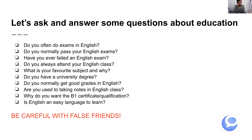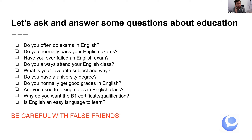Number one: Do you often do exams in English? [pause] Number two: Do you normally pass your English exams? [pause] Number three: Have you ever failed an English exam? [pause] Number four: Do you always attend your English class? [pause] Number five: What is your favourite subject and why? [pause] Number six: Do you have a university degree? [pause] Number seven: Do you normally get good grades in English? [pause] Number eight: Are you used to taking notes in English? [pause] Number nine: Why do you want the B1 certificate?